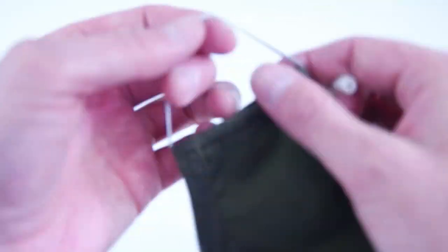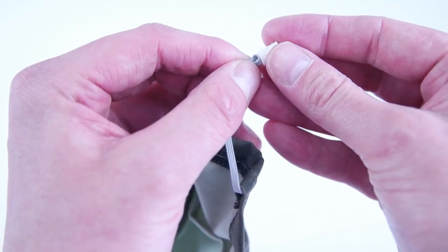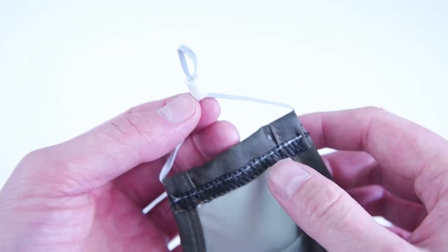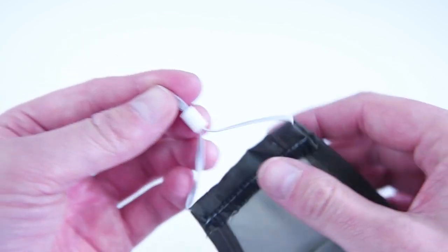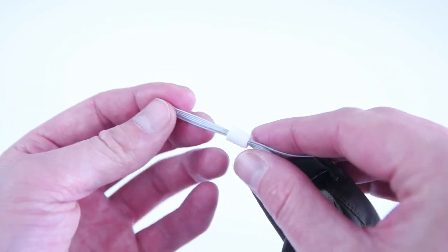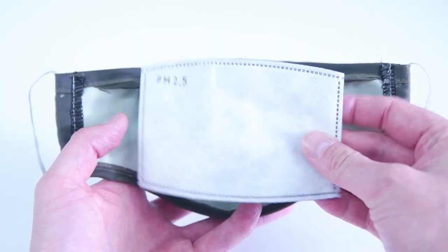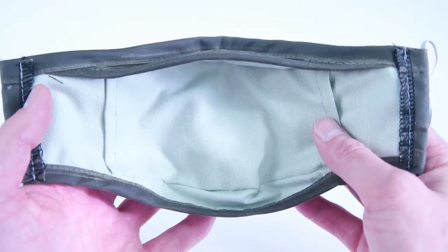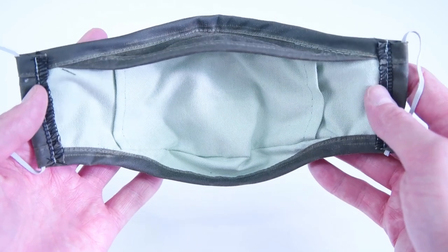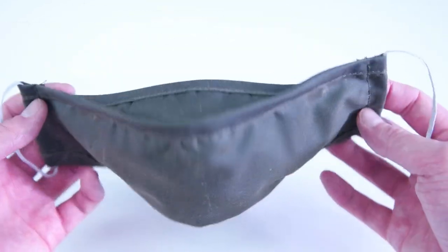And if you're making these for other people and don't know their size, you can use elastic cord stoppers so that way you can adjust that elastic and it will fit everyone. If you're just making the face mask and not adding the visor, you can go ahead and add your PM 2.5 filter into the pocket and your mask is complete.